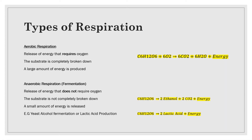We have two different types of respiration: aerobic and anaerobic. Aerobic respiration is the release of energy that requires oxygen — the substrate is completely broken down, so at the end there is none of that substance left. Whereas with anaerobic respiration, the substrate is not completely broken down and some of it remains at the end.